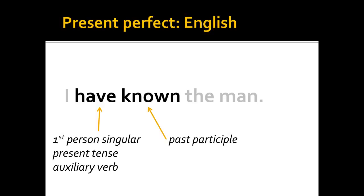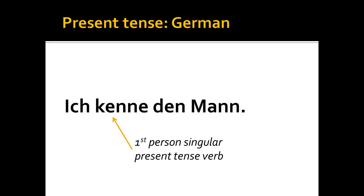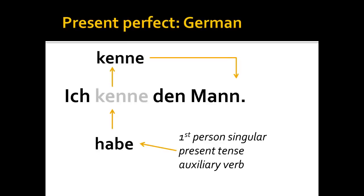The same construction of an auxiliary verb and the past participle can be found in German. The translation of the English sentence 'I know the man' is 'Ich kenne den Mann.' 'Ich,' the first person singular personal pronoun, agrees with the verb 'kenne,' a first person singular present tense verb. Now, if I want to change this present tense sentence into the present perfect tense, I need to do two things. First, I need to take the verb 'kenne' and remove it from the second position — we'll move it to the end of the sentence and turn it into the past participle.